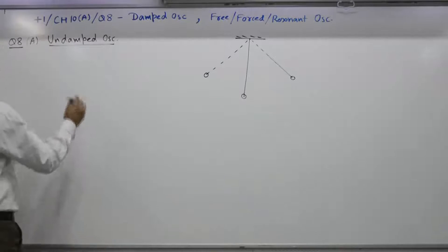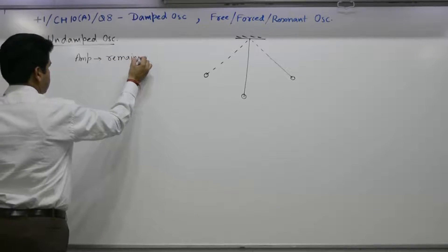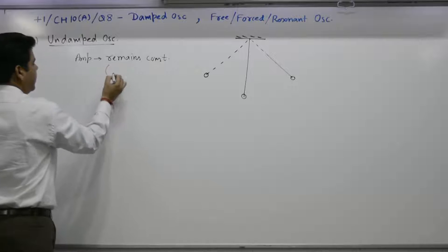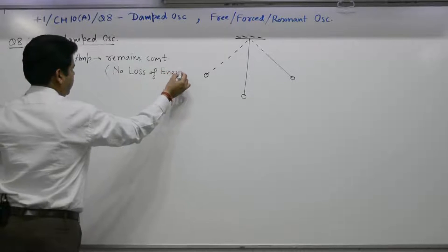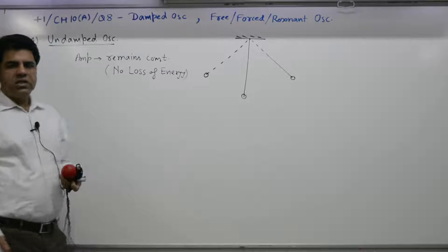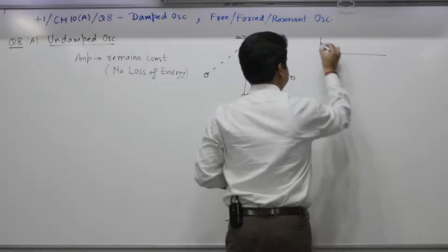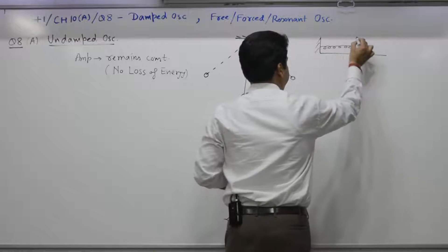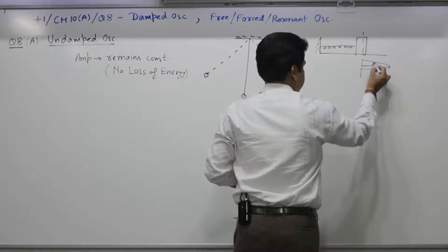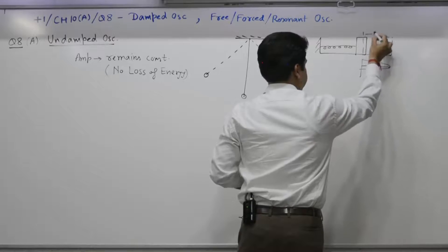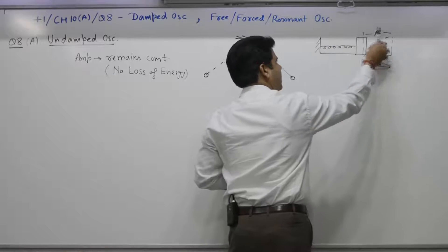Such an oscillation in which amplitude remains constant — because there is no loss of energy — is known as undamped oscillation. For a spring-mass arrangement, you move it to the right with amplitude A. It will continue to oscillate with amplitude A. Even if you come after one hour, amplitude is A.